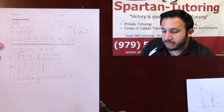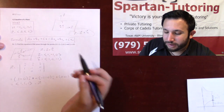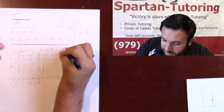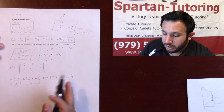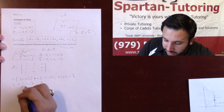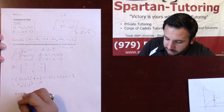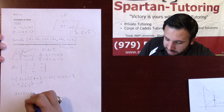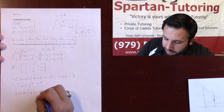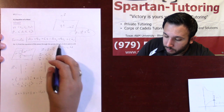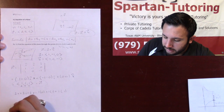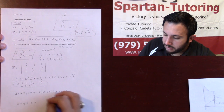Now that you have your normal vector, the last thing you need is a point. You can use whichever point you want — let's use the point (0, 1, 1) as our x0, y0, z0. Now that I have my normal vector and my point, we just plug and chug. You're going to have a times x plus b times y plus c times z equals a times x0, plus b times y0, plus c times z0. With a = 1, b = 1, c = 1 and x0 = 0, y0 = 1, z0 = 1, your final answer is x + y + z = 2.